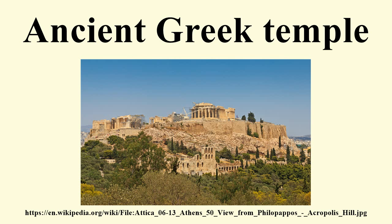These components allowed the realization of a variety of different plan types in Greek temple architecture. The simplest example is the temple in antis, a small rectangular structure sheltering the cult statue, where a small porch or pronaus was formed by the protruding cella walls, and two columns were placed between the fronts of the antae. When equipped with an opisthodomos, this type is called the double-anta temple.